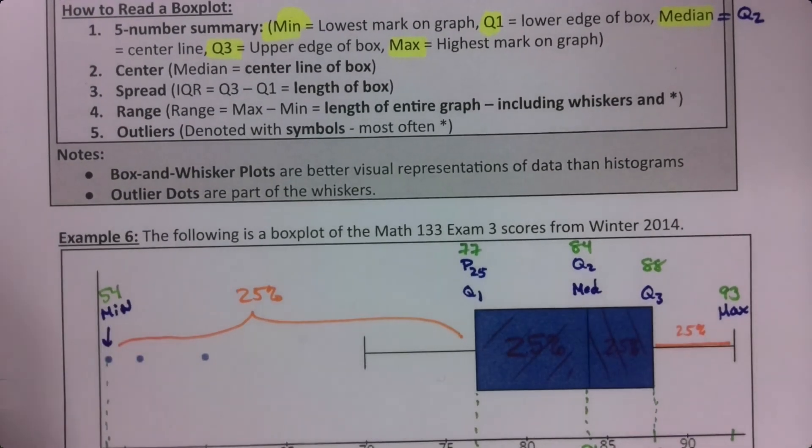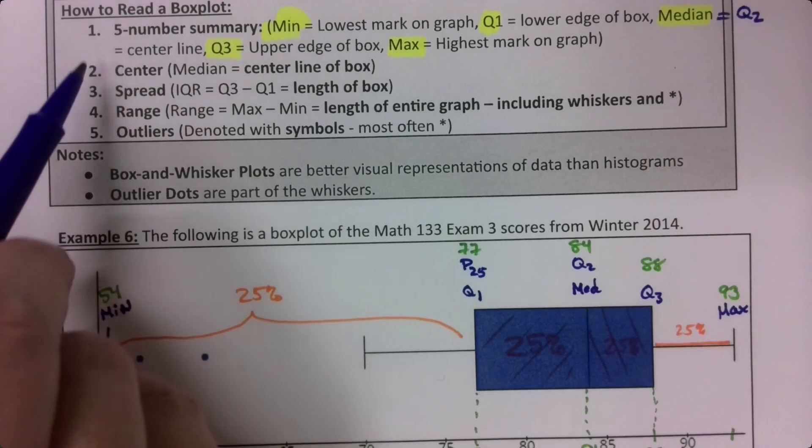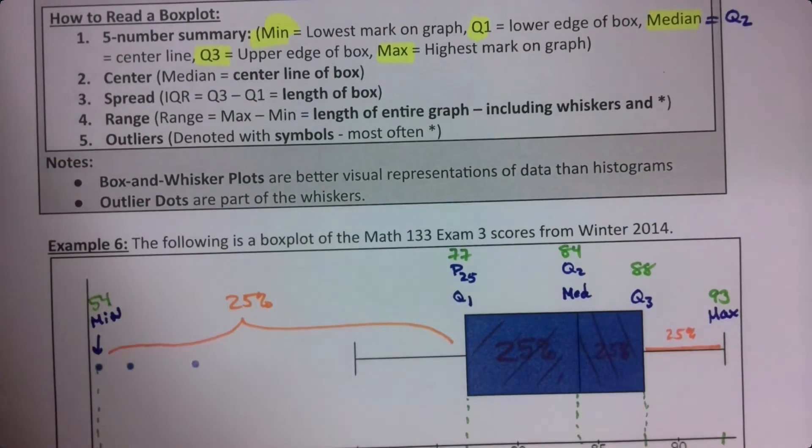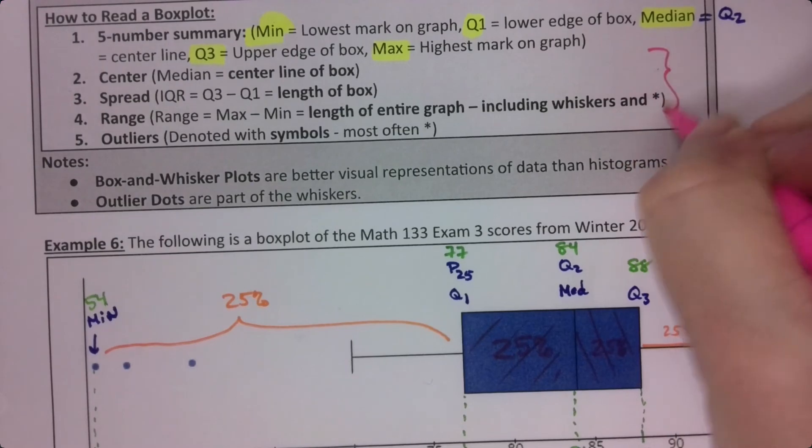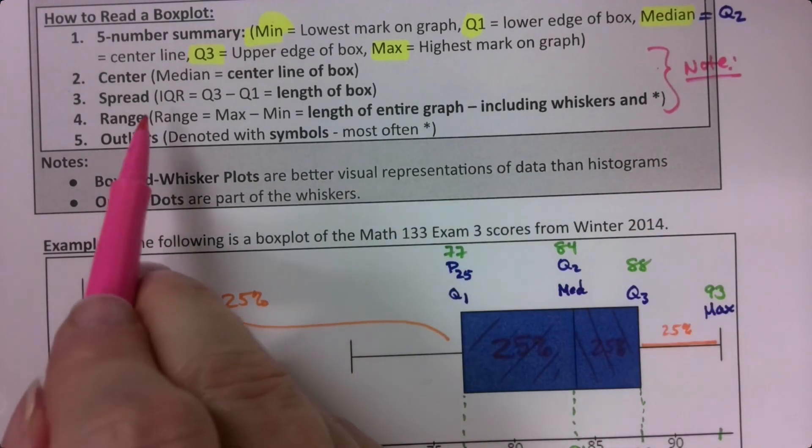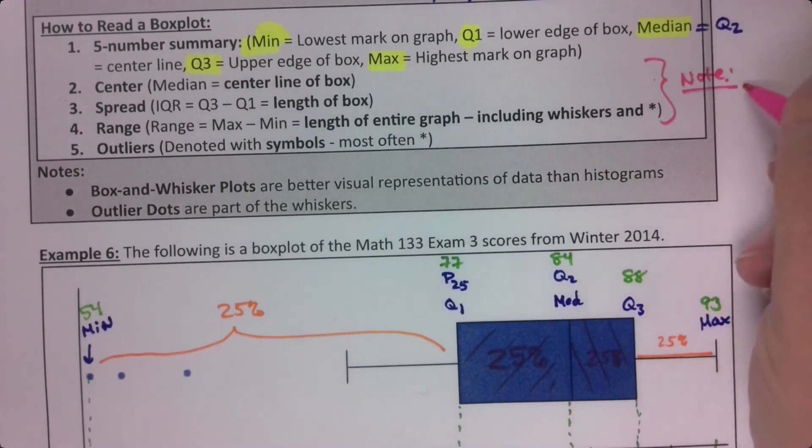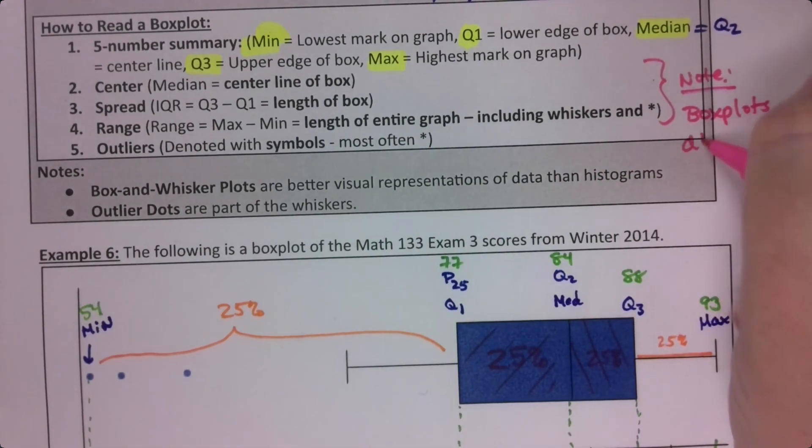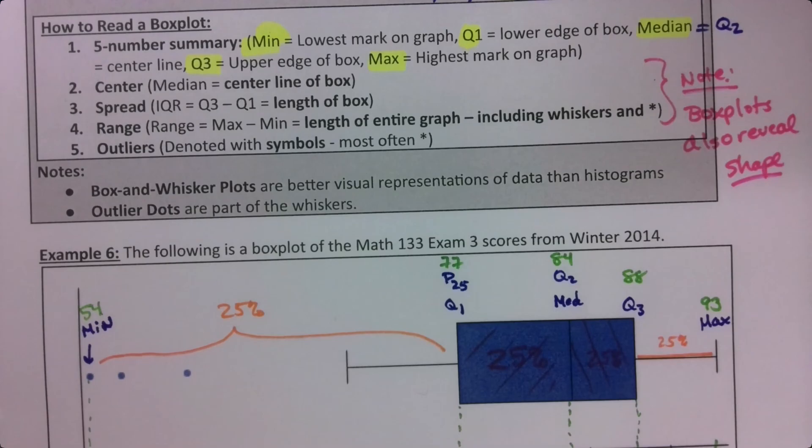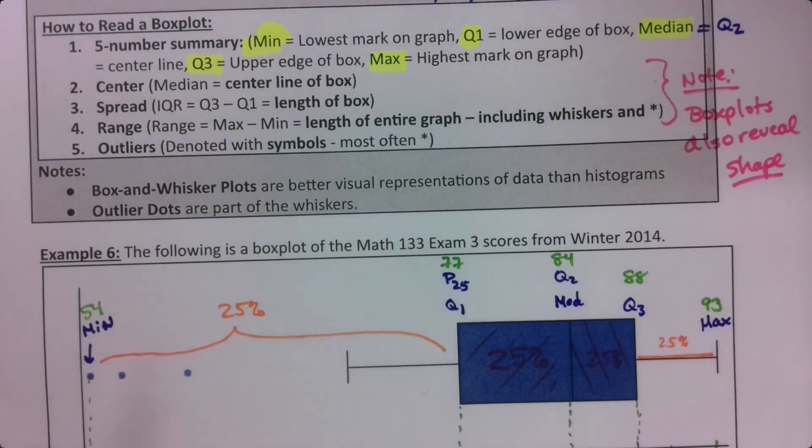So I will mention also up here that a box plot gives us these things, but I'm going to make a note over here. Note: not only does a box plot tell us outliers and range, but a box plot also reveals the shape of a distribution, whether it's skewed left or skewed right or symmetric.